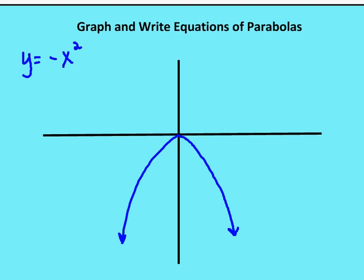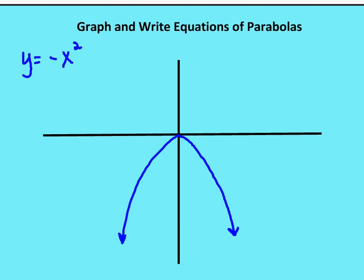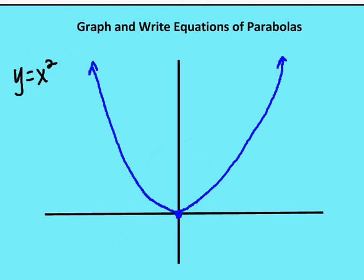In y equals negative x squared, the parabola now faces down. y still has the exponent of one, and x has the exponent of two, but now it's a negative x value so the parabola is flipped upside down. I like to call this the unhappy parabola, and the upward one the happy parabola. The unhappy parabola has a negative value in front of x, and the happy parabola has a positive value in front of x.